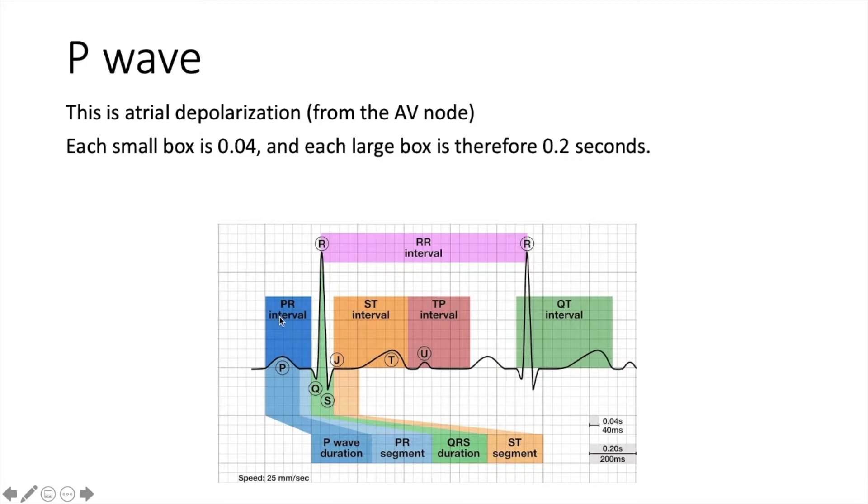So the P wave as I mentioned previously is the atrial depolarisation. One thing that's important to know about ECGs is how many seconds it counts towards. The most important thing to know is that each small box is 0.04 seconds making each large box 0.2 seconds. You have five small boxes in a large box and this is important because it tells you if the PR interval, for example, is too big or too small. For now, it's important just to know this is what a normal P wave looks like.